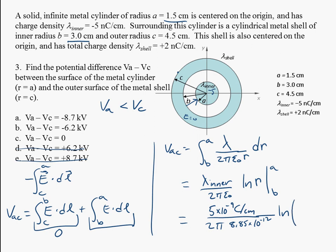So if we get the log of 1.5 over 3, and when we calculate that all out, I get 6.2. Again, I put the minus sign in by hand.